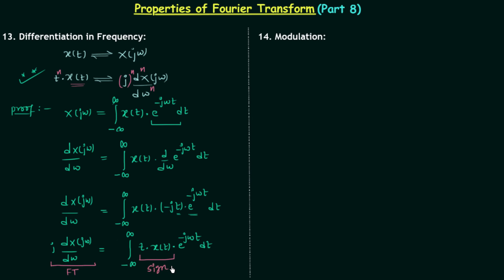So the Fourier transform of t·x(t) corresponds to j · d/dω X(jω), which matches the property when n equals 1. Similarly, performing differentiation one more time gives j^2 times the second derivative and t² in the time domain. Performing differentiation n times yields j^n times the nth derivative and t^n · x(t) in the time domain.